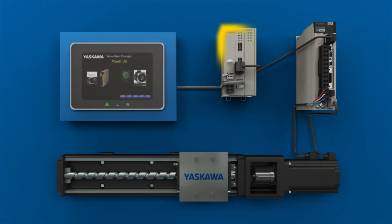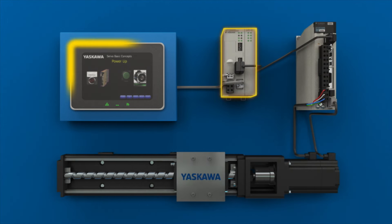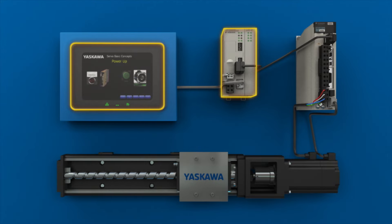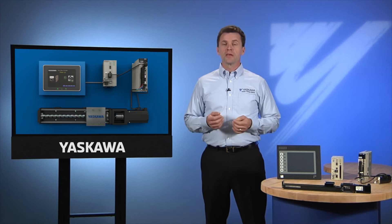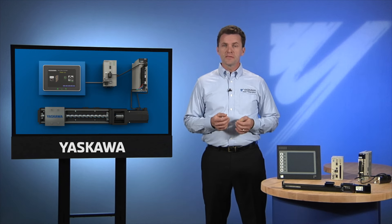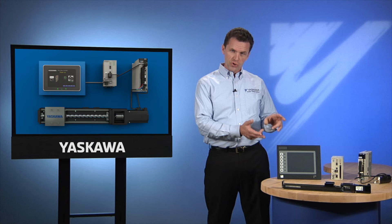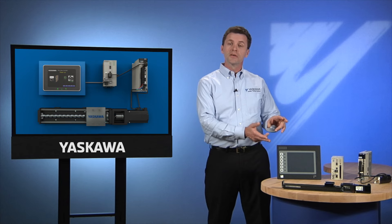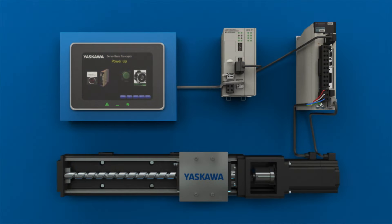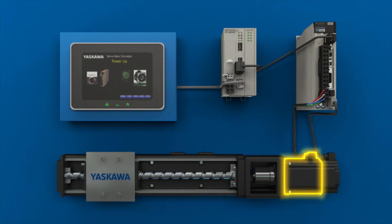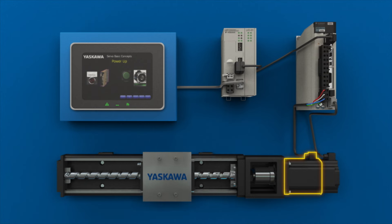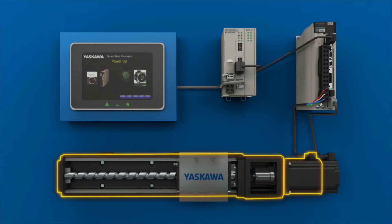Connected to the controller, you'll find an operator interface. The interface is used to start, stop, and adjust the various functions of the machine. Interfaces can be simple buttons and indicator lamps, or they may be a more complex human-machine interface, or HMI. On the other end of the process, the servo motor is connected to a mechanical system that it moves — the servo mechanism.